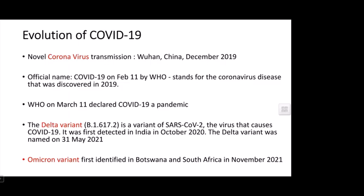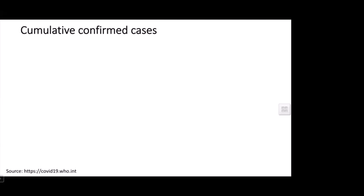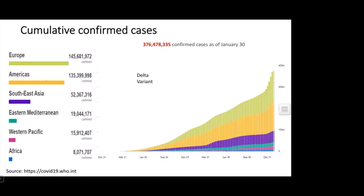The Omicron variant was identified in Botswana and South Africa in November 2021, and there are reports of another Omicron variant emerging. The confirmed cases reached 307.6 million till January 30, with Europe having more cases than America. The data shows a rising trend, growing sharply with the Delta variant and again with the Omicron variant.